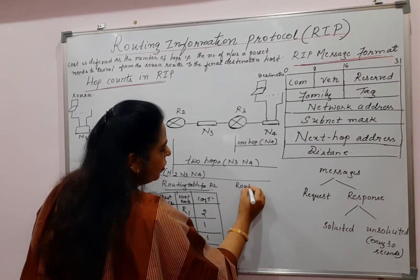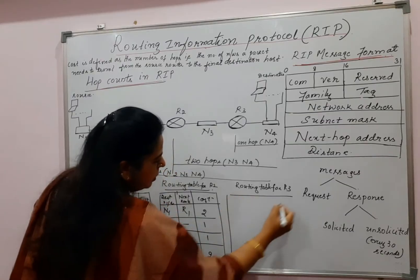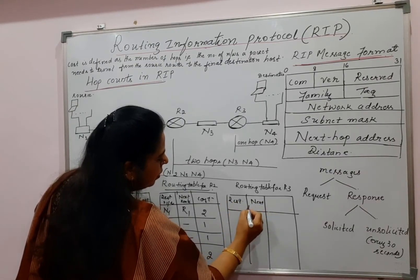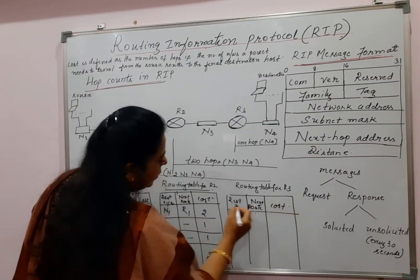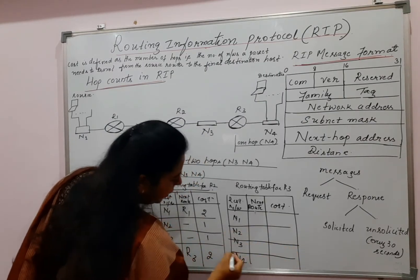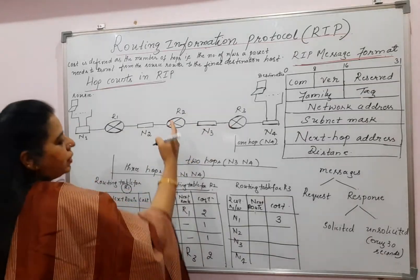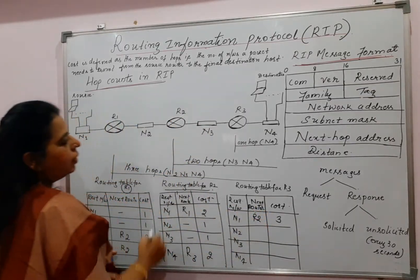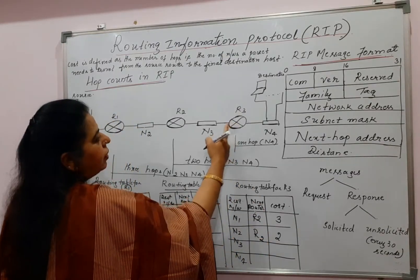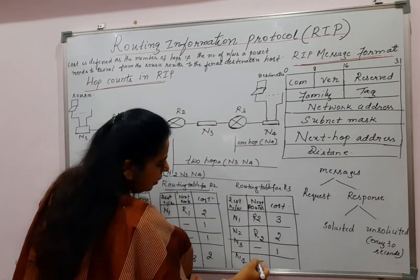Next, construct the routing table for R3. In this diagram there are three routers, so you will have three tables. Destination network, next router, and cost. The possible networks are N1, N2, N3, and N4. For R3 to reach N1: 1, 2, 3 — three hops, so the cost is 3 and the next router is R2. For N2: two hops and the next router is R2. For N3: directly connected, cost is 1. For N4: directly connected, cost is 1.